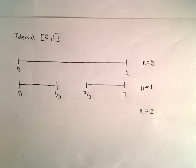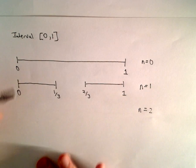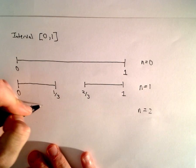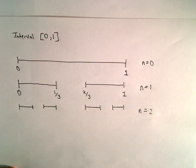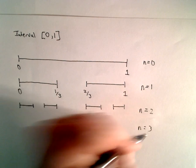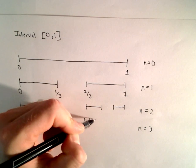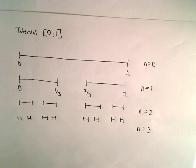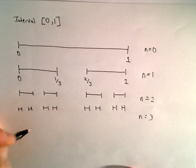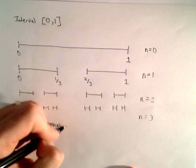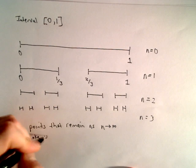At the second step we keep repeating this procedure over and over infinitely many times. I look at each interval that's left and remove the middle third again — so I remove the middle third from the first interval and the middle third from the second interval. At n equals three we do this again, removing the middle third from each little interval. As n goes to infinity, the points that remain make up the Cantor set.